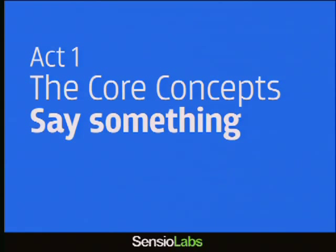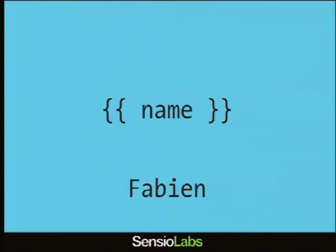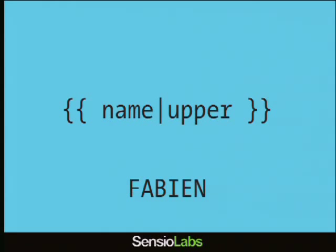The first core concept I want to talk about is the first thing you want to do in a template: to say something, to output something, to replace a placeholder with a value. And as you know now, this is how you can do that: double braces, what you want to display, the name value, and you close the double braces. Sometimes you want to modify the content — the way you can modify what is displayed to the user is by using what we call filters. A filter is what you put after the pipe.